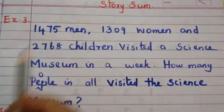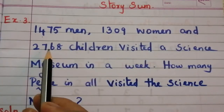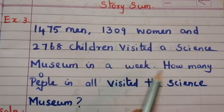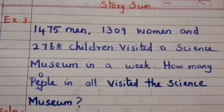Example 3 — Story sum. 1475 men, 1309 women, and 2768 children visited a science museum in a week. How many people in all visited the science museum? To solve any story sum, remember three steps: first, note down the given data; second, find out what we need to find; and third, decide which operation to use.